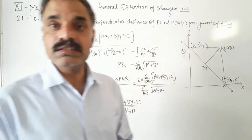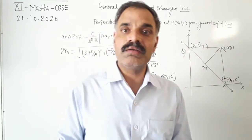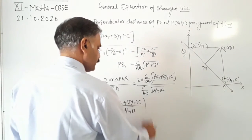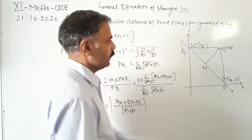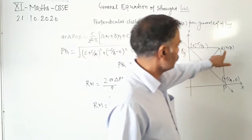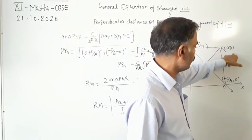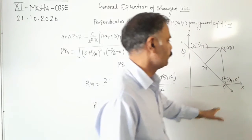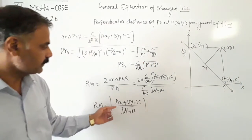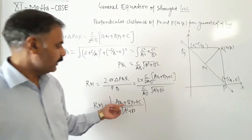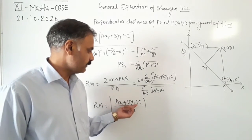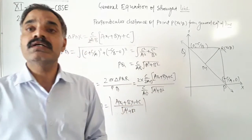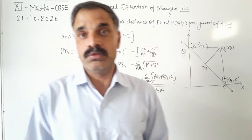This is the distance, which we always take as positive. This is the perpendicular distance of the point (X₁, Y₁) from the line, and it is equal to |AX₁ plus BY₁ plus C| upon under root A² plus B².